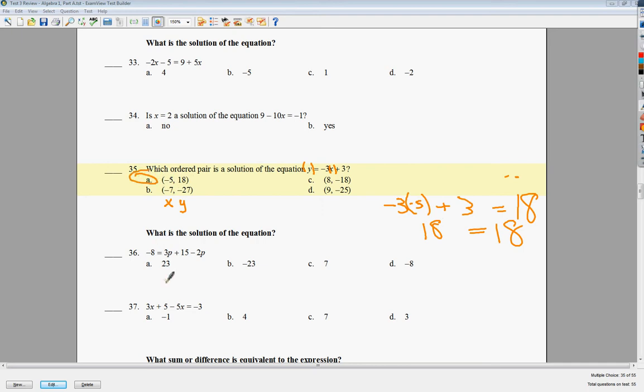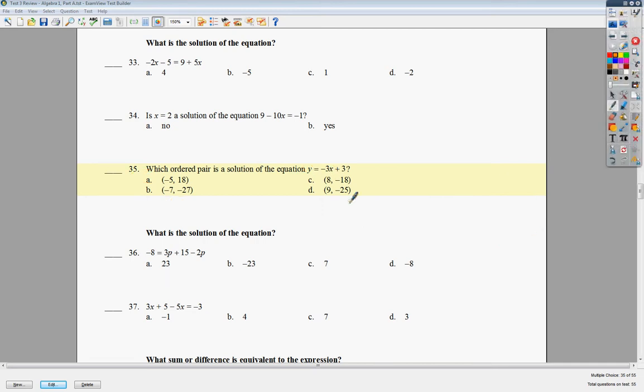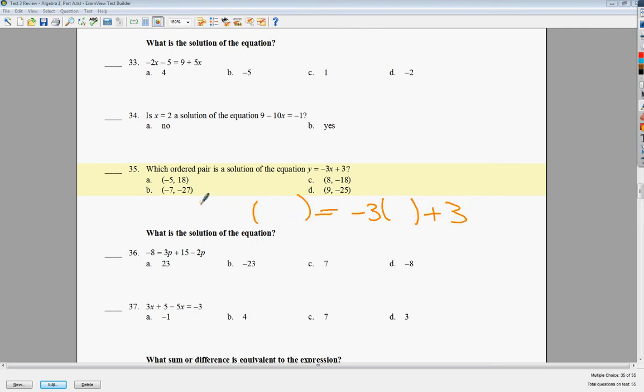I'm going to show you one that doesn't work, just so you can see it. So let me clear this out. If I did, let's say I started with B for some reason. My y value goes in here, negative 27. My x value goes right here, negative 7. Negative 3 times negative 7 is equal to positive 21 plus 3. 21 plus 3 is 24. And they are not the same thing. So it didn't make a truth statement, which means it's not a solution. That's why 35 doesn't work.